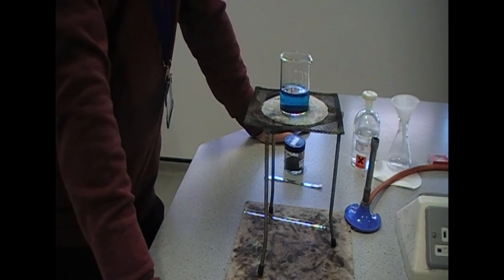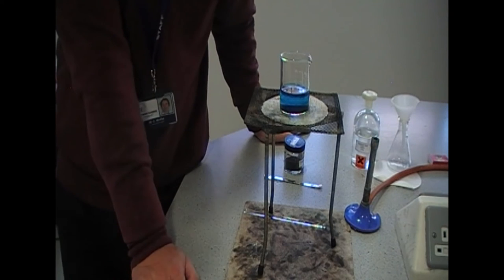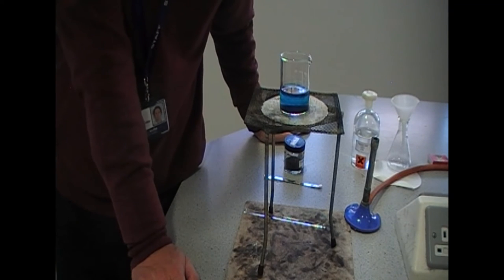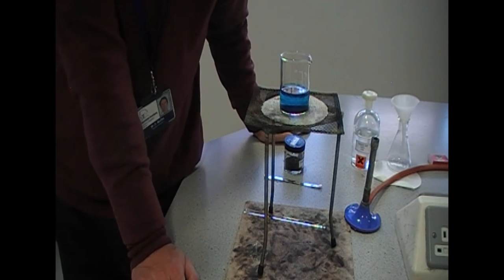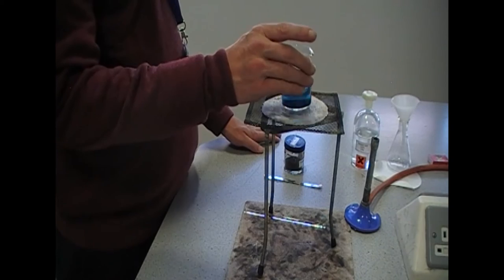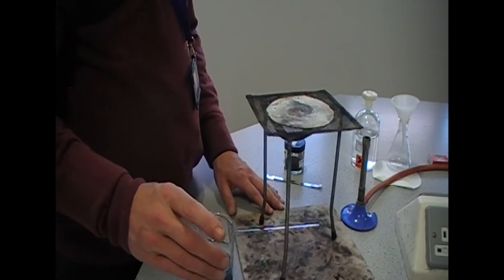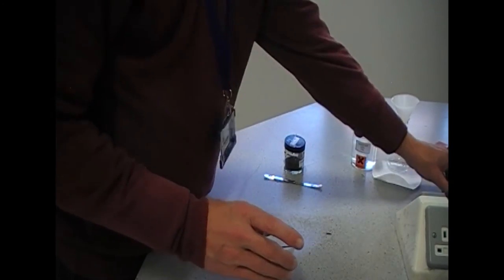We've got to the stage where we've got a blue solution and some unreacted copper oxide at the bottom. Which means we can now go on to step five. Set up the filter funnel and paper over the conical flask using the clamp stand to hold the funnel. Filter the contents of the beaker from step three. I've left this for a while so it's quite cool to the touch. We can move the Bunsen burner and tripod away for a moment.